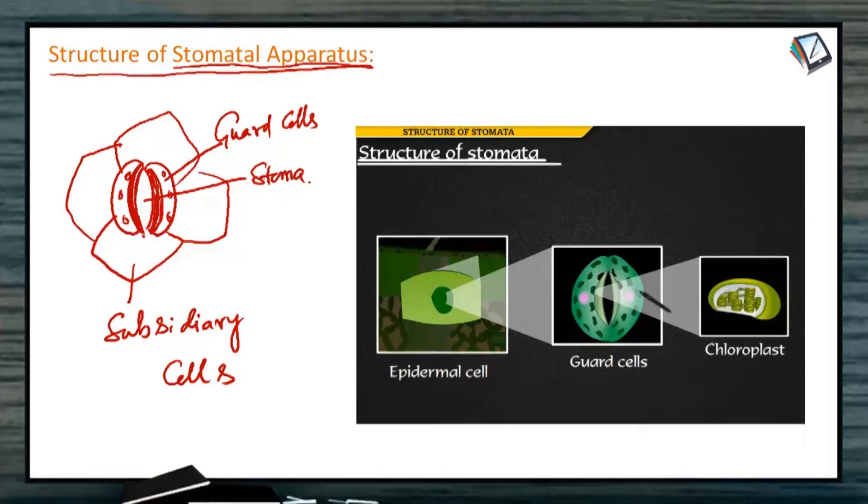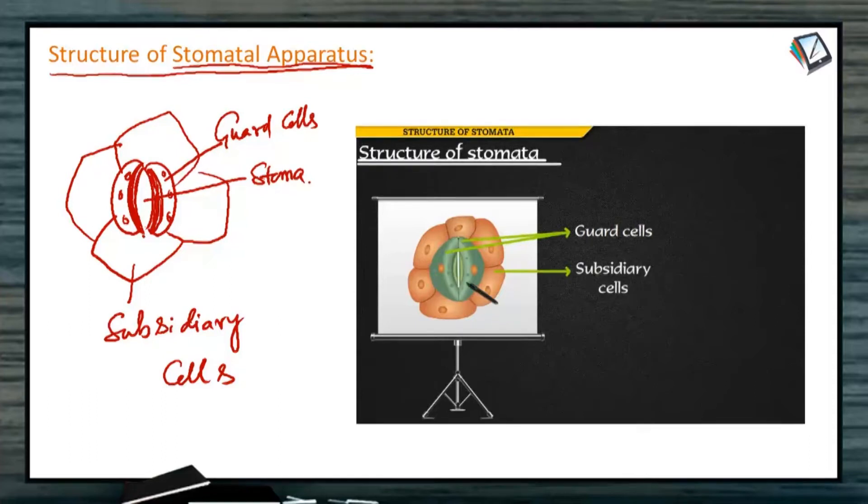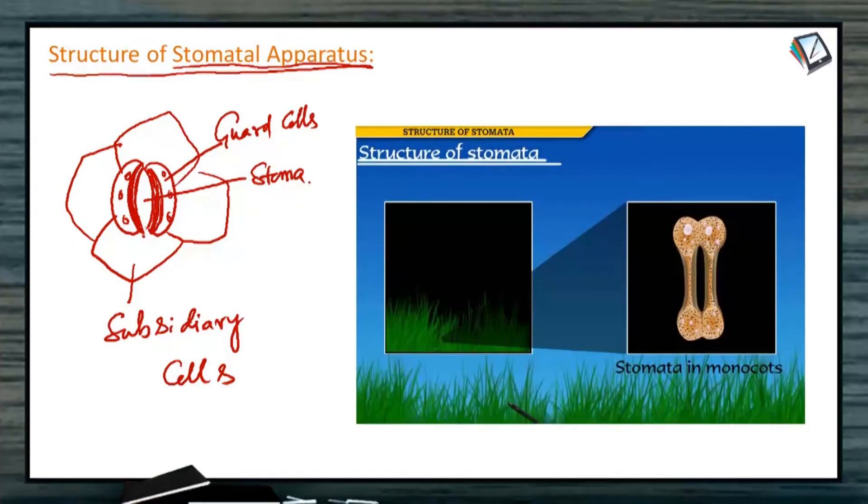and thin towards outside. Each guard cell contains a few chloroplasts. Look at the movement of the guard cells. Stoma is being closed and opened due to the movement of the guard cells. This is the structure of Stomatal Apparatus,